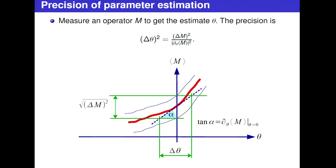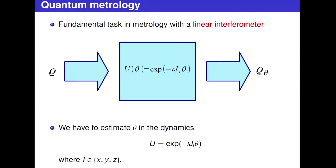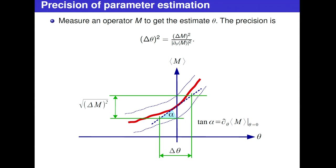How can we compute the variance of the parameter estimation? Imagine that at the output we measure the operator M — specifically its expectation value — and we estimate theta from this. The variance of this estimation depends on how large the variance of M is, and how much the expectation value of M depends on theta. If it depends on theta a great deal, the estimation variance will be small. This is the standard error propagation formula.